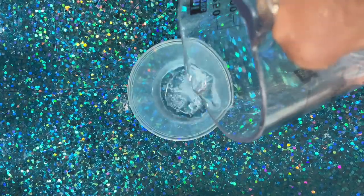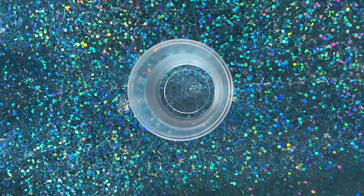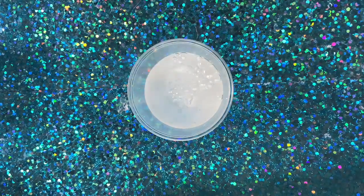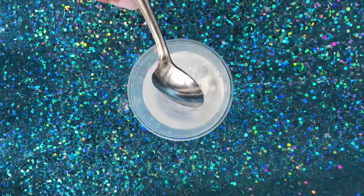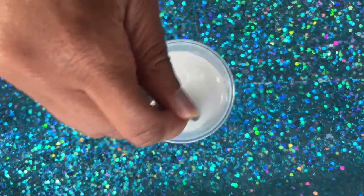First we'll pour half a cup of warm water into a cup or bowl. Next we'll add two teaspoons of baking soda. Now we'll mix these two ingredients together.